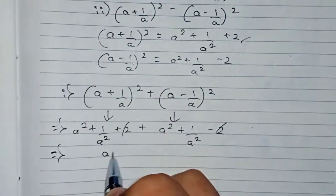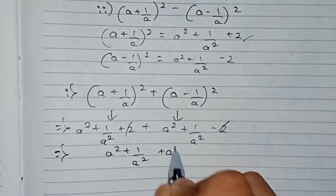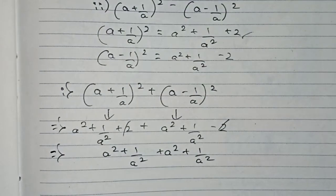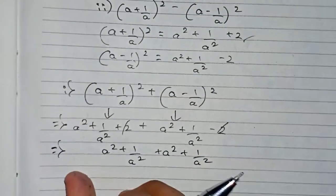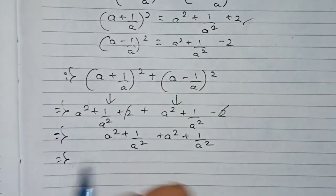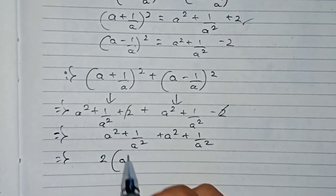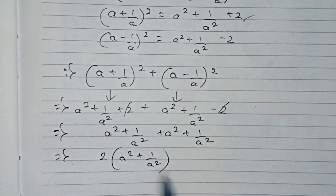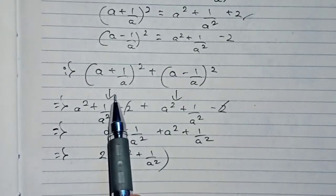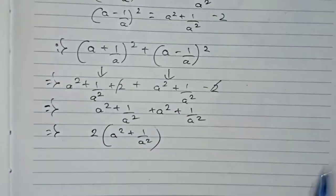The +2 and −2 cancel each other out. So we have a² + 1/a² plus a² + 1/a², which means 2 × (a² + 1/a²). This is the simplest form of (a + 1/a)² + (a - 1/a)².